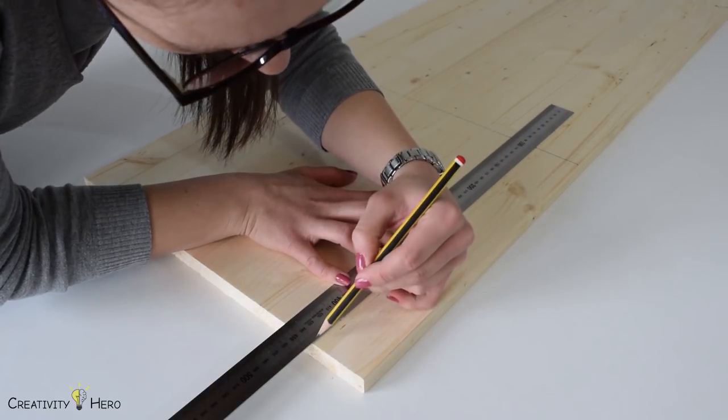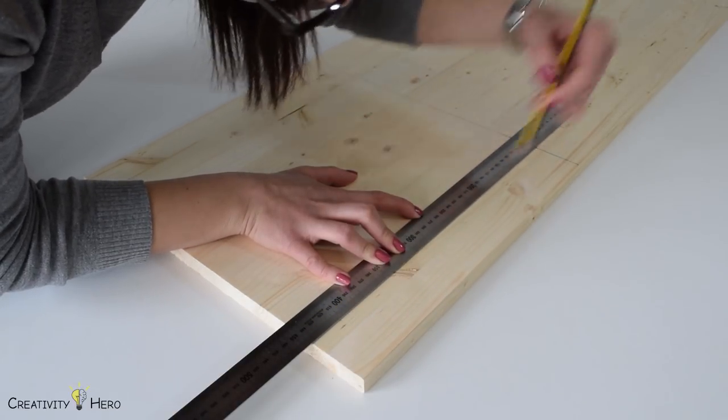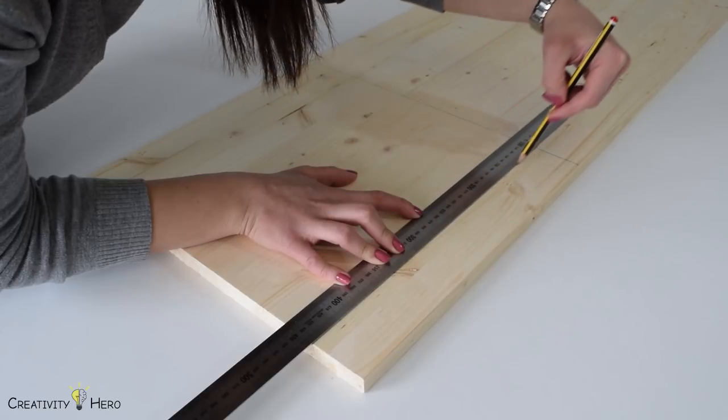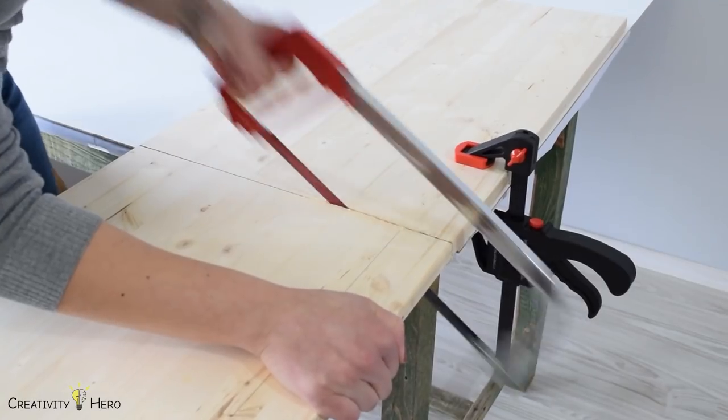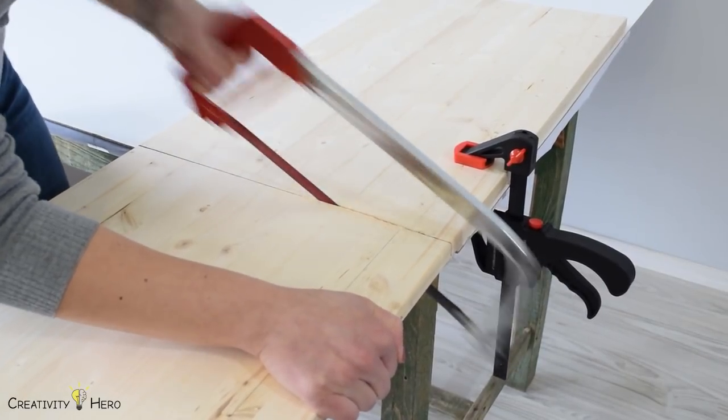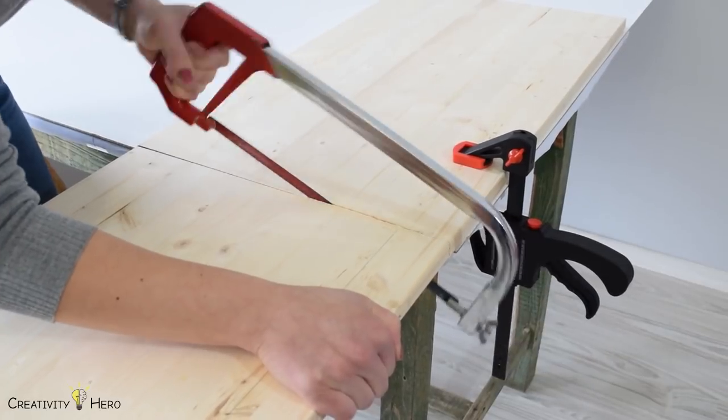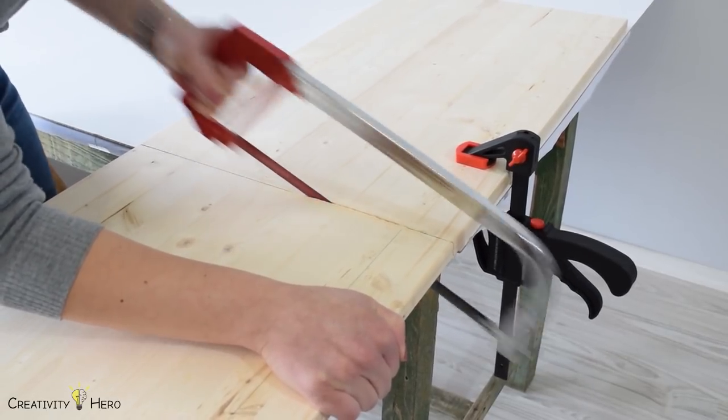To begin I'm going to cut the wood panel at 35 by 35 centimeters using a hand saw. You can make a larger or smaller clock depending on the space on the wall where you want to place it.